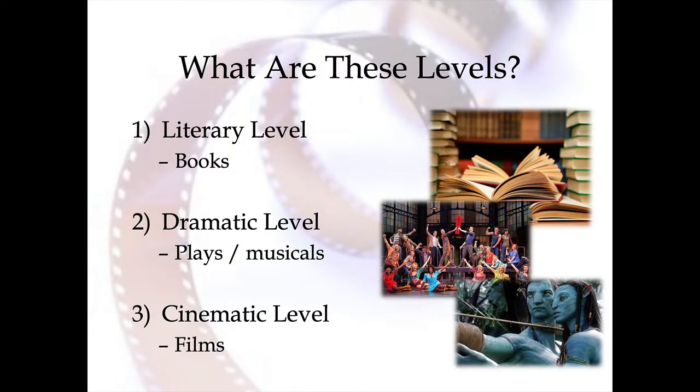By definition we talk about three levels of film. The first level is the literary level — the things in film that films have in common with literature or books. The second level is the dramatic level, the things that films have in common with live theater such as plays or musicals. And the third level is the cinematic level, the things in film that are uniquely film.